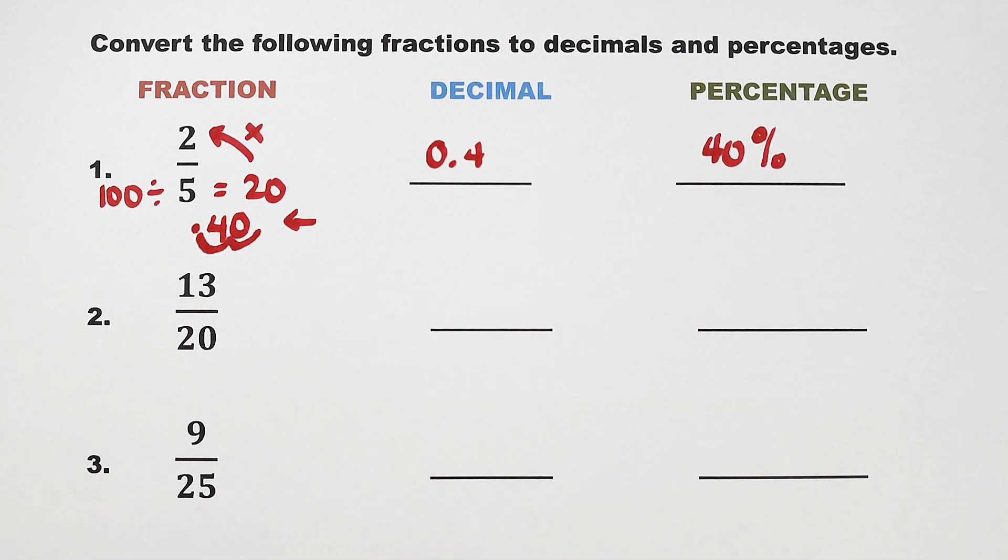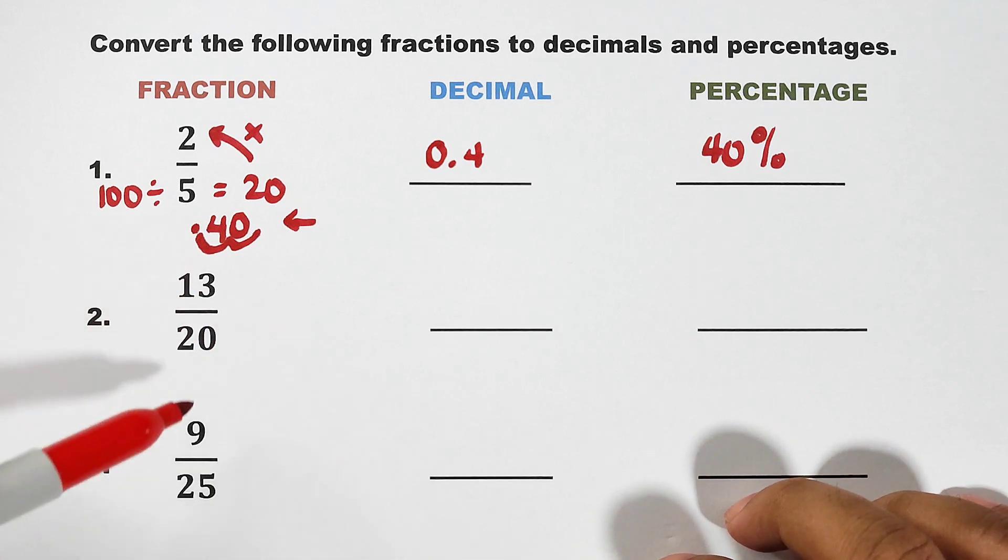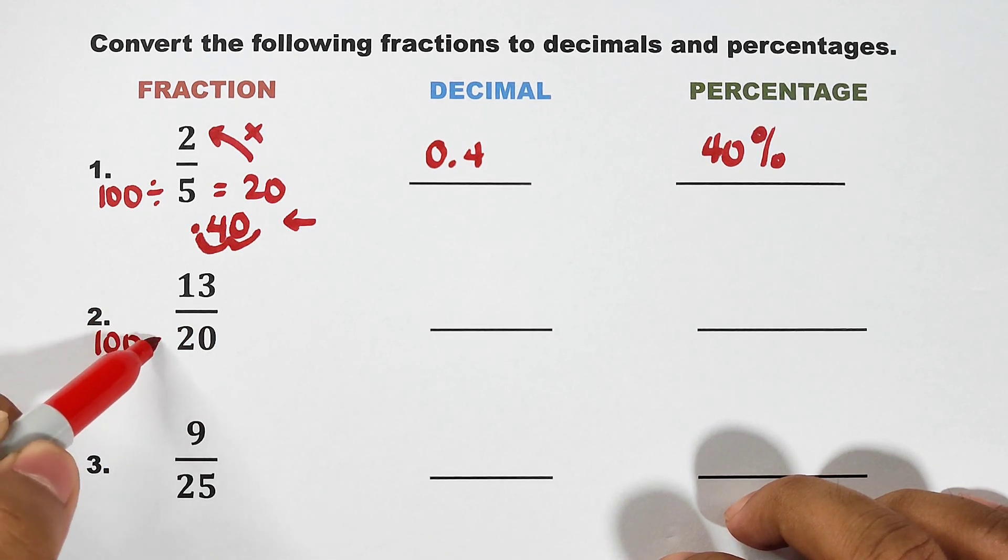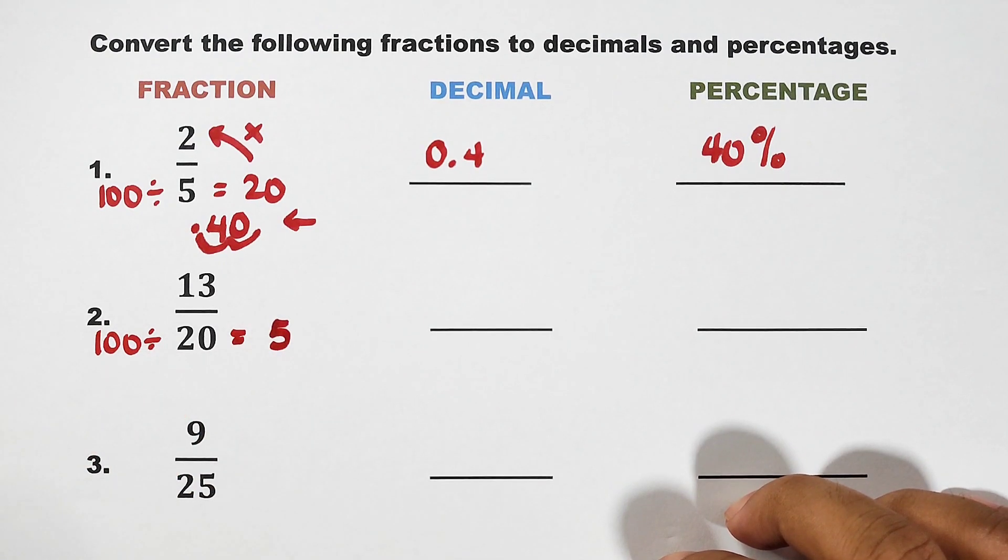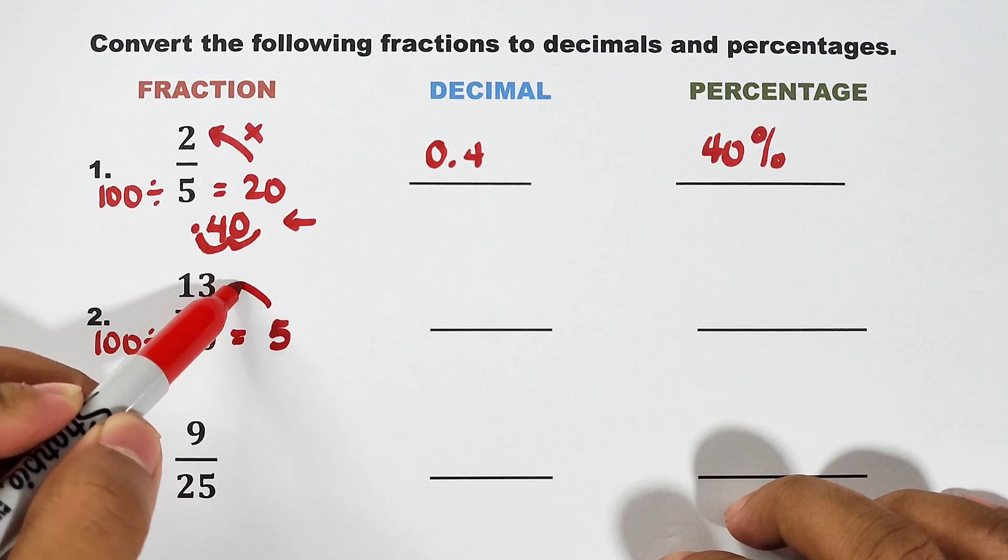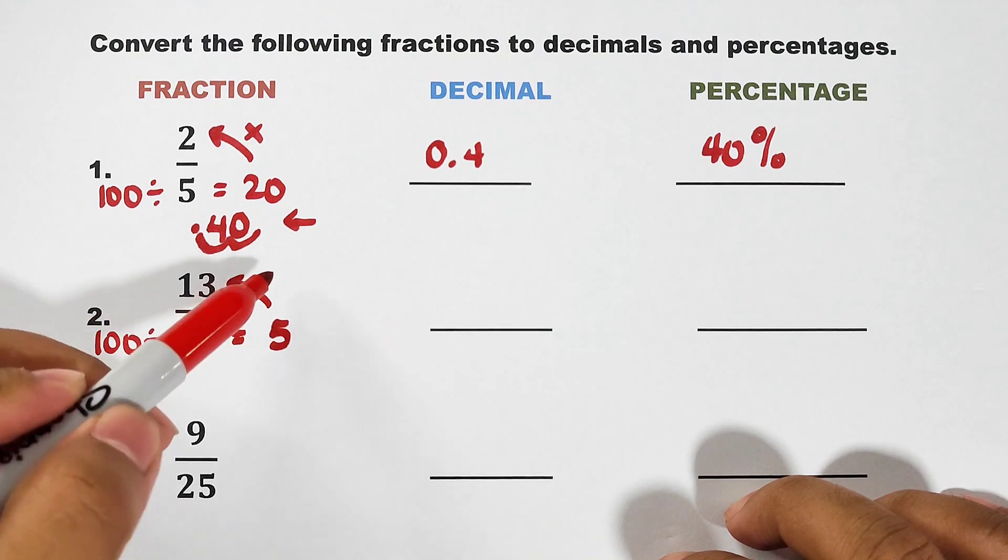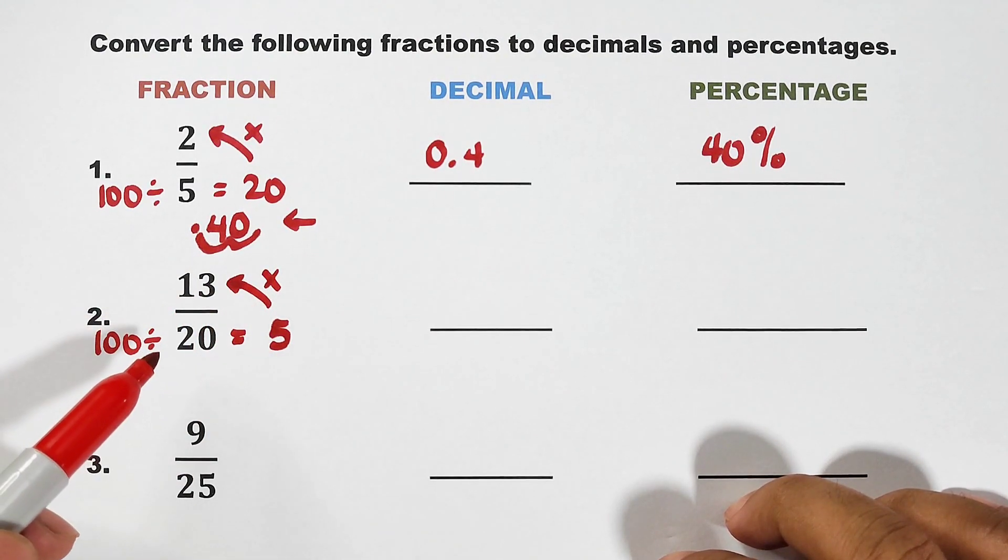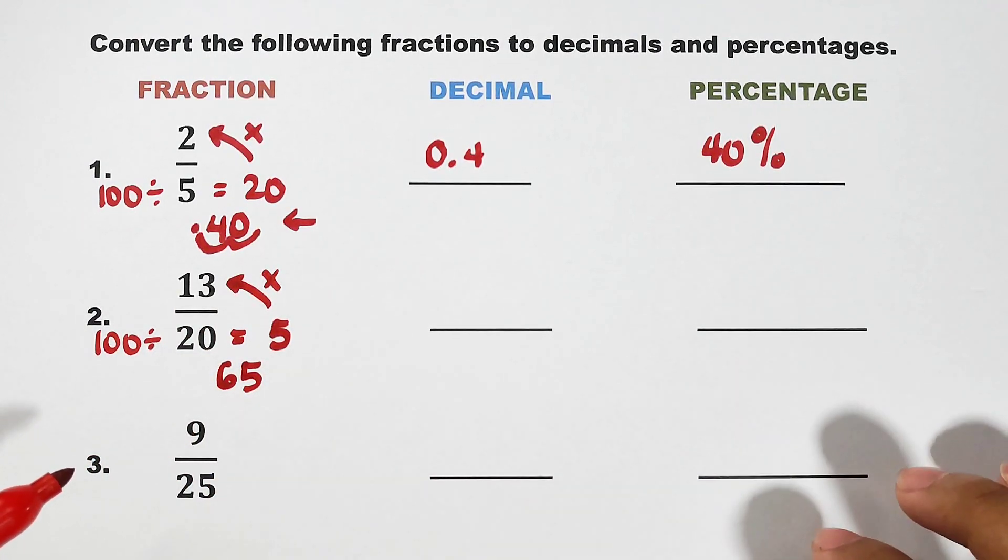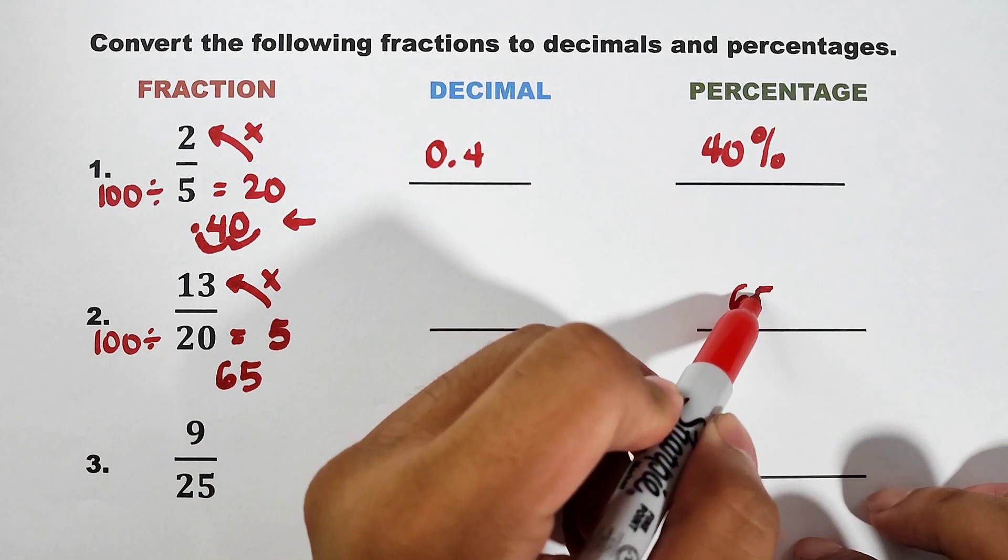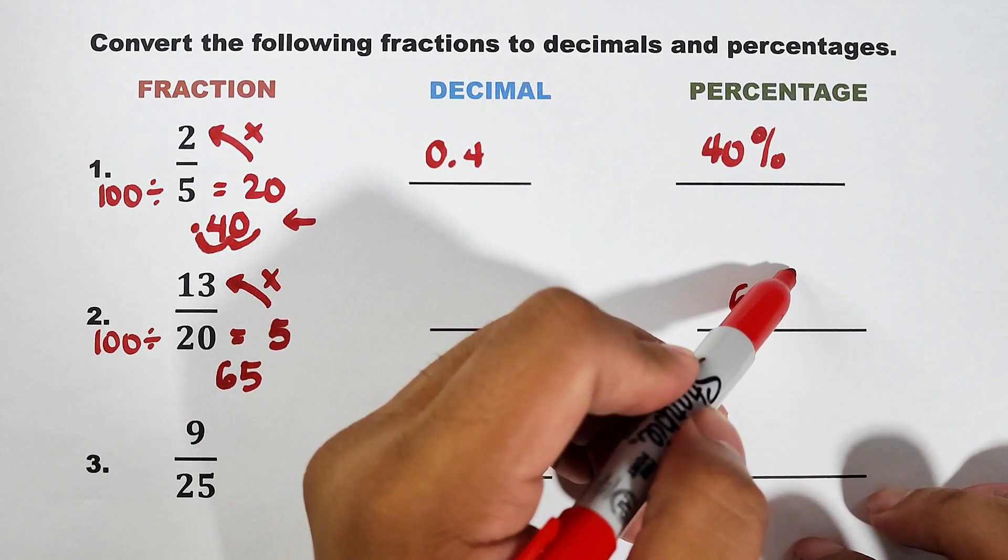Now for you to understand well and to master this technique or shortcut, let's have the second fraction, 13 over 20. Divide 100 by your denominator. 100 divided by 20 is equal to 5. Multiply it using the numerator. 5 times 13, that is equal to 65. Get the 65. Then attach the symbol of percentage.